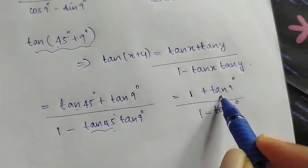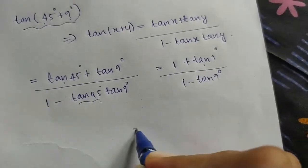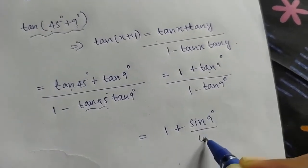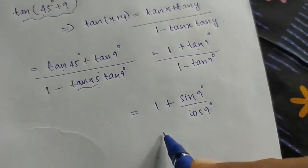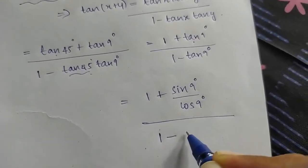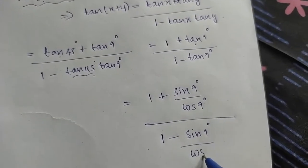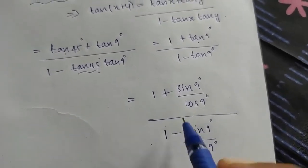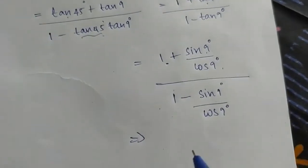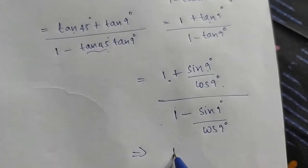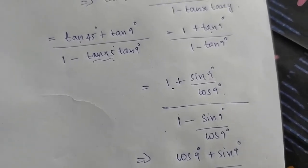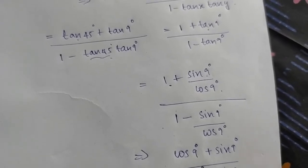Because tan 9 degree equals sin 9 degree divided by cos 9 degree, we write the standard value: 1 plus sin 9 degree over cos 9 degree, divided by 1 minus sin 9 degree over cos 9 degree. This gives cos 9 degree plus sin 9 degree divided by cos 9 degree. The denominators cancel, giving cos 9 plus sin 9 over cos 9 minus sin 9.